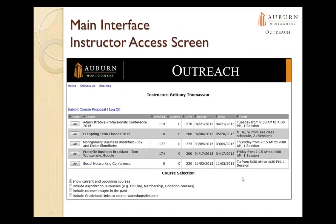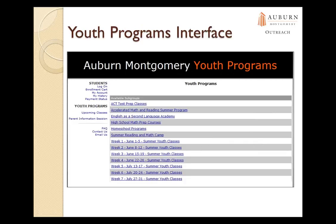Here's an example of what an instructor access screen looks like. You can see the course title, the number of students enrolled, whether there's anyone on the wait list, and dates and times of the program. There's a button to the left of each program for instructors to view the name roster. They can download the roster to an Excel spreadsheet, email students from ACEweb, view courses they taught in the past, and record grades.